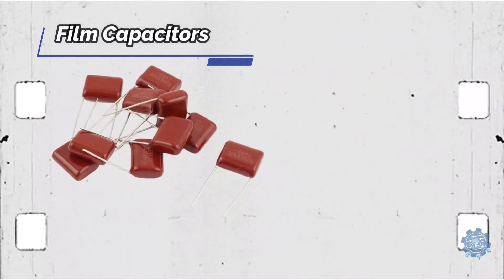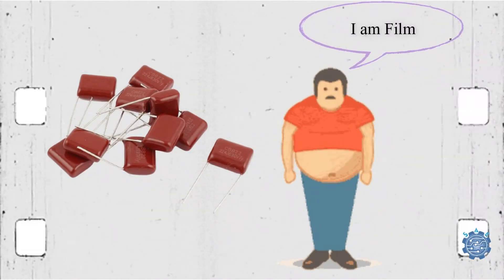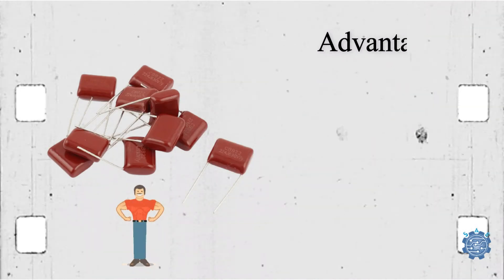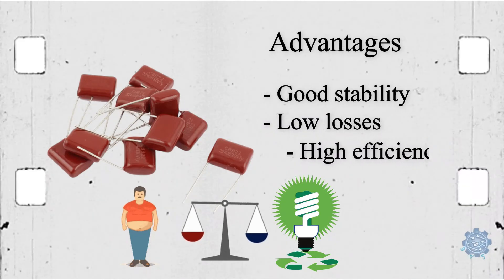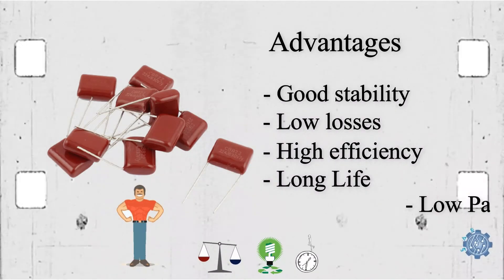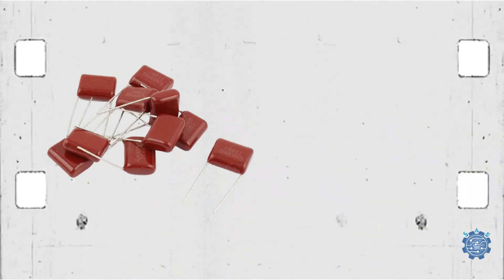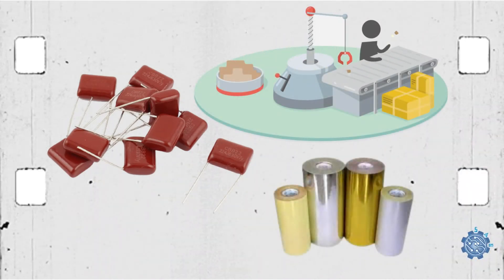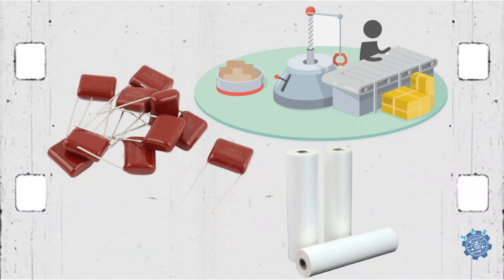Film capacitors use a very thin film with a precise width to achieve the proper capacitance. Therefore, they have good stability, low losses, high efficiency, long life, and a low parasitic inductance for a low price. These capacitors can be manufactured with polyester films, metalized films, propylene films, and so on.